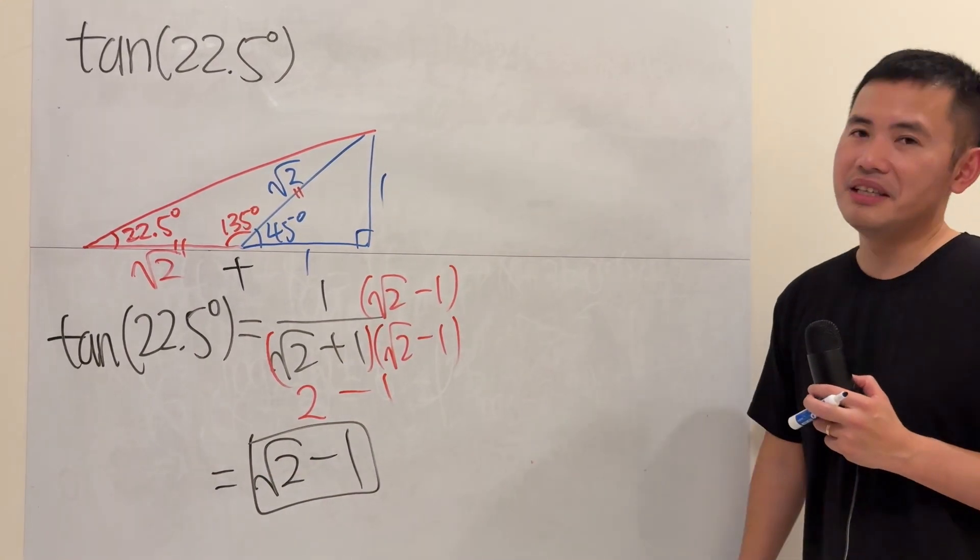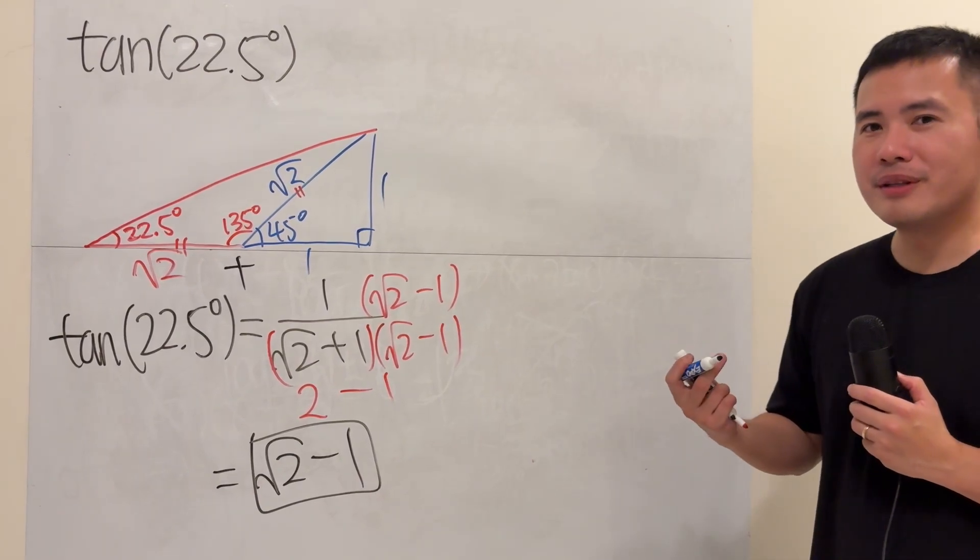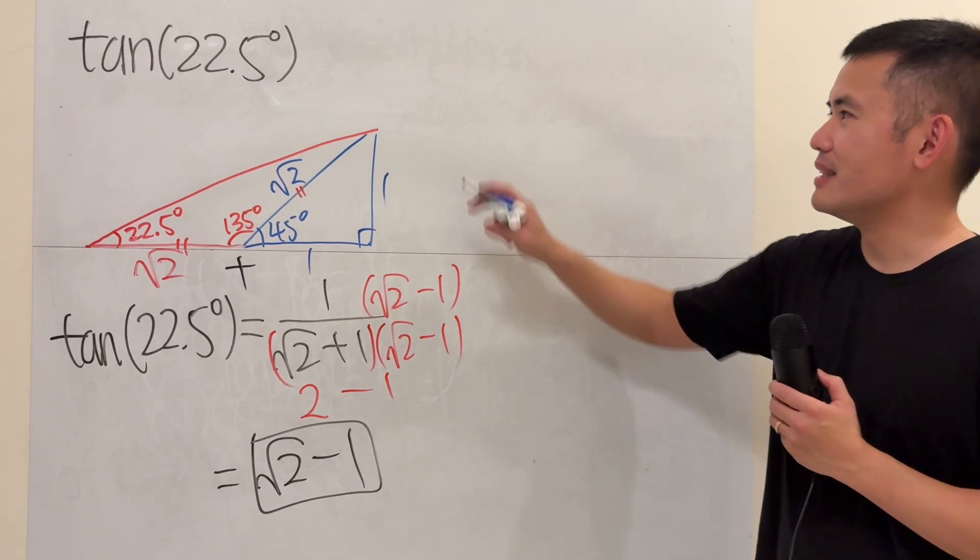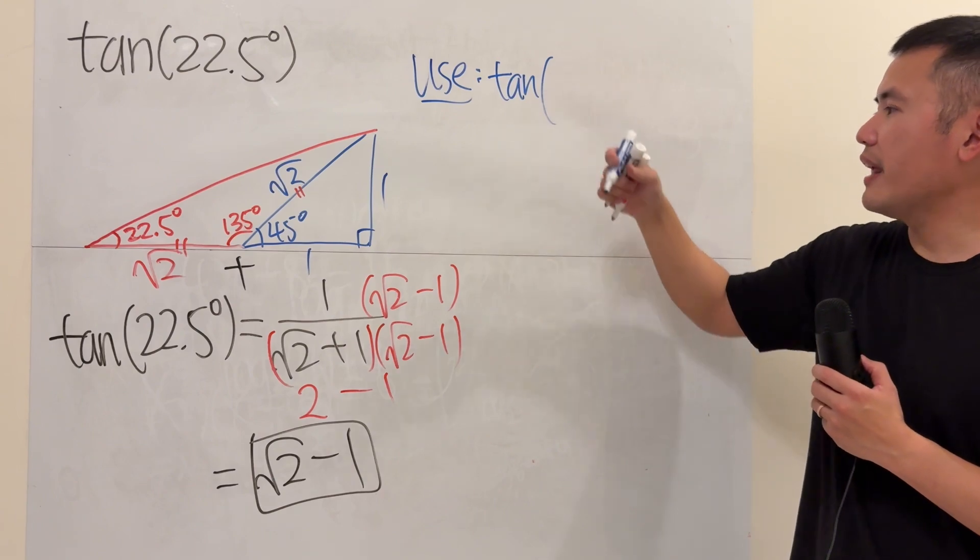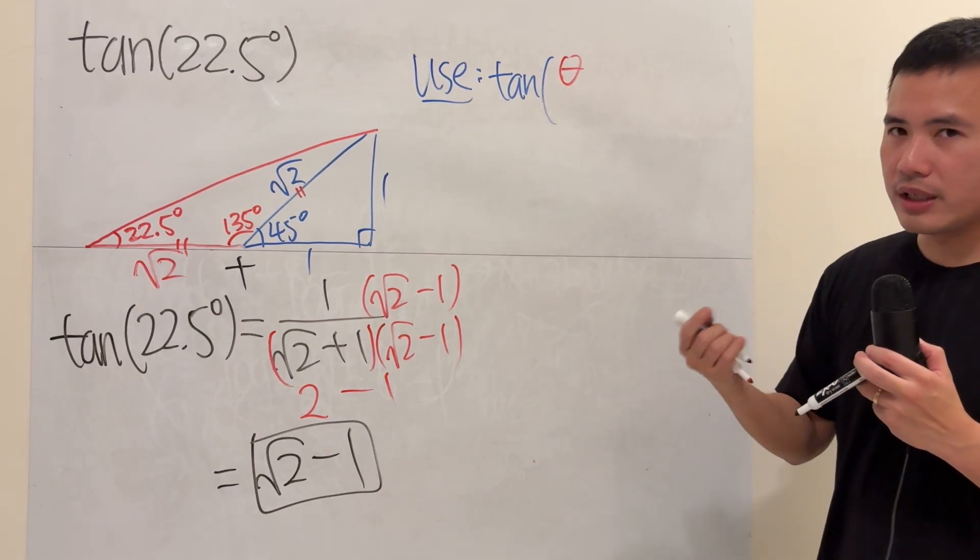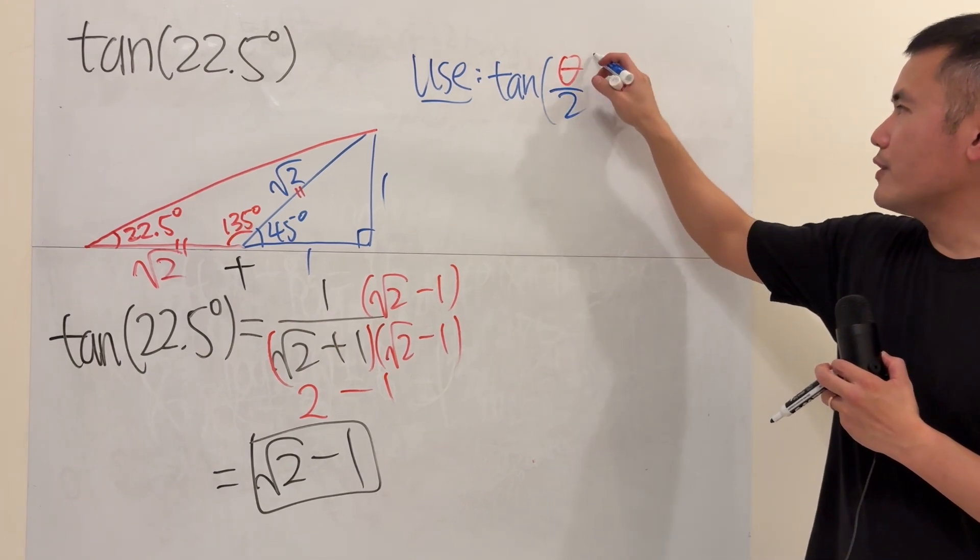Now, this is the moment that you guys have been waiting for. We can use the half-angle identity. So the deal is that tangent of theta over 2. I don't have a table, so I cannot put the pen down somewhere. Anyway. Theta over 2.